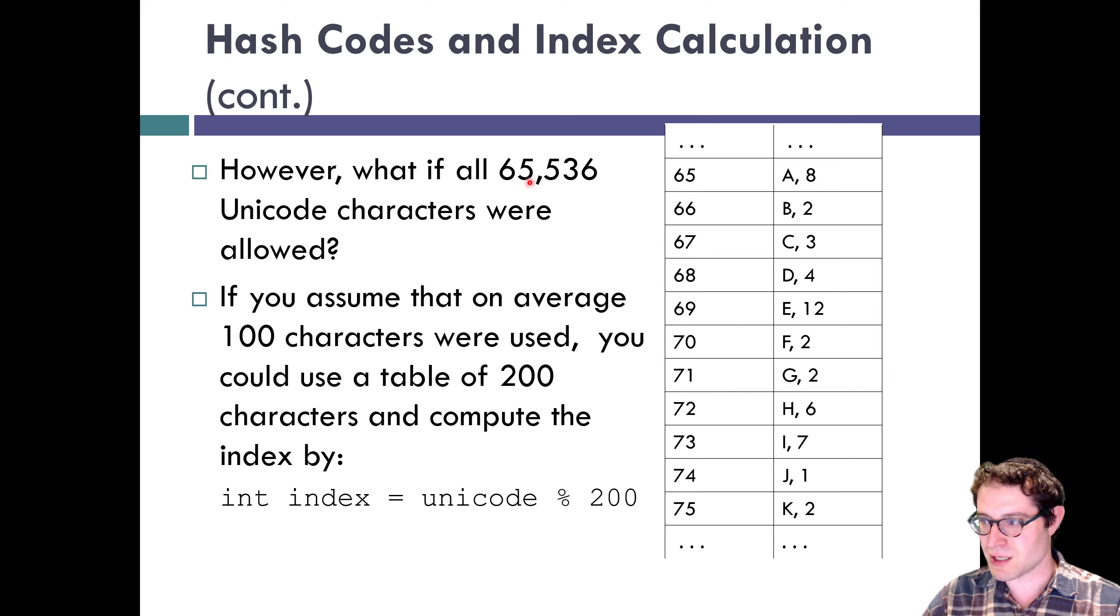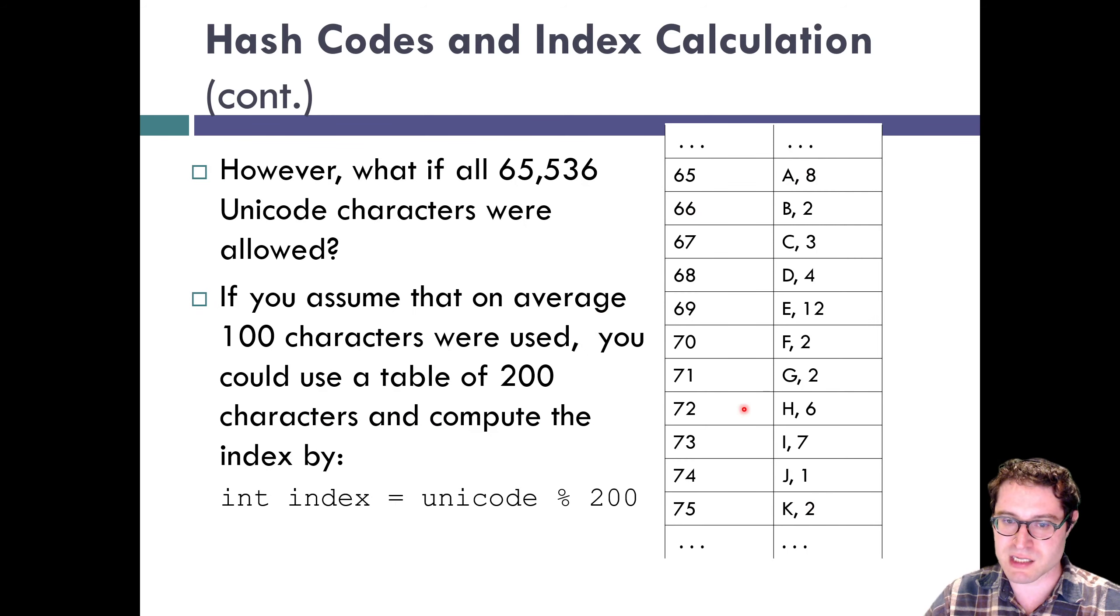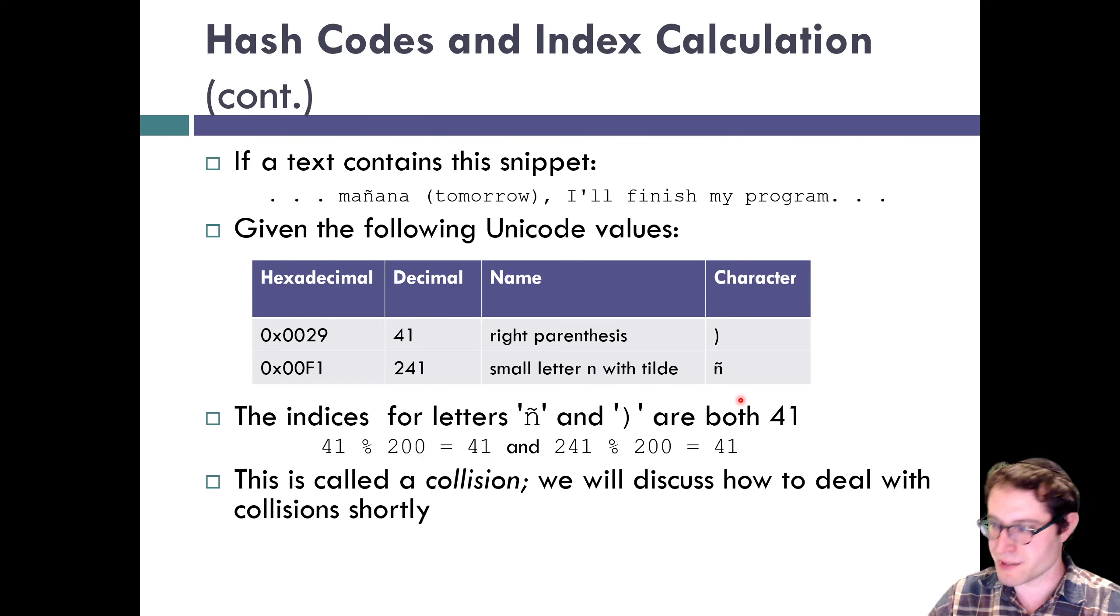We'll figure out where to put it by taking the unicode value and mod it by 200, and that will give us the index we actually want to store it at. However, the issue comes about collisions. For instance, in this snippet of text "mañana tomorrow I'll finish my program"—a very common feeling by the way—here is the hexadecimal unicode value for the right parentheses which is 41, and for the small n with the tilde that's 241. They will be indexed to the same location, which is 41 in the table, and that will be a collision.